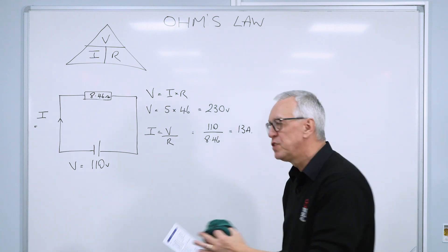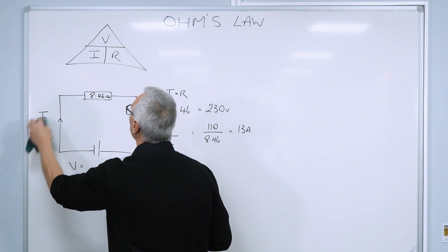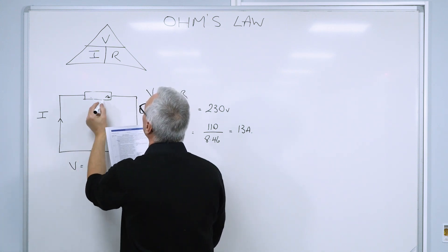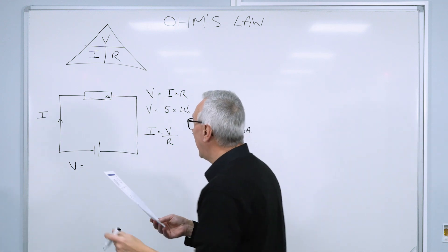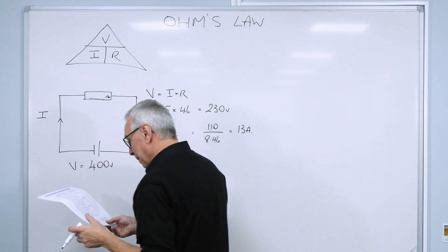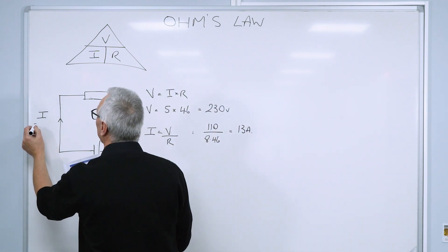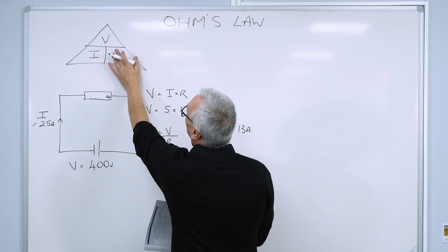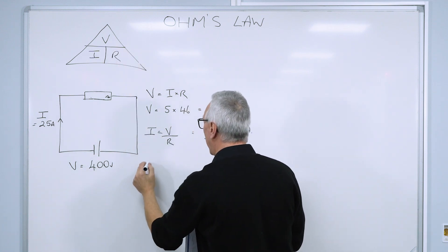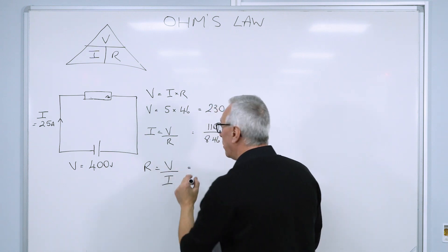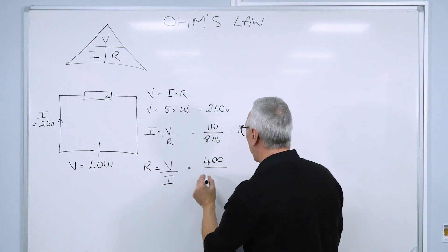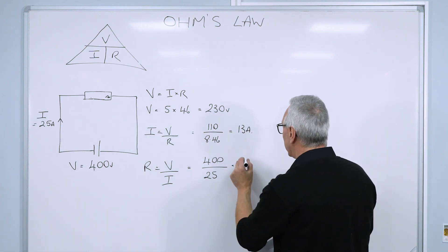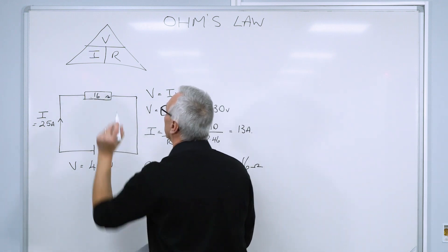And finally, let's work out resistance in a circuit. We'll just remove those. I might as well leave that Ohms symbol in there. Let's just put some figures in here. So let's say that we have a voltage of 400 volts. And we've got a current of 25 amps. And we want to know what the resistance of that circuit is. Well, we just cover up R to get the formula. R equals V over I. Volts divided by current. Put the figures in. 400 divided by 25. Are you doing it on your calculator? I've worked it out earlier. We get a resistance there of 16 Ohms.